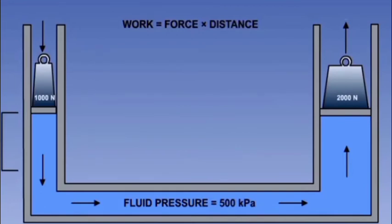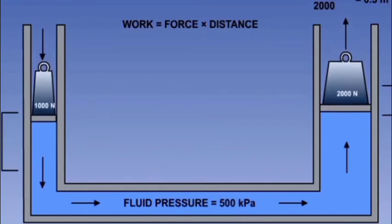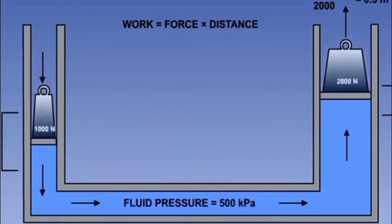If we now move the piston down by a small variation of 0.6 meters, what will be the work done? We know that work done is force multiplied by distance: 1000 multiplied by 0.6, which gives 600 joules.